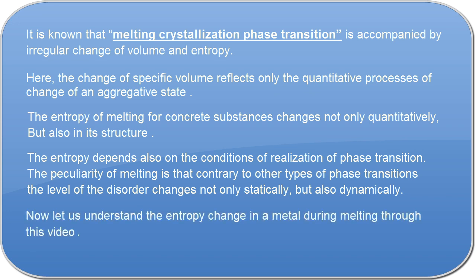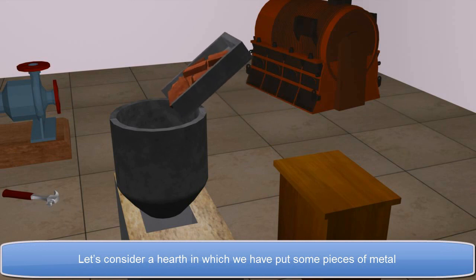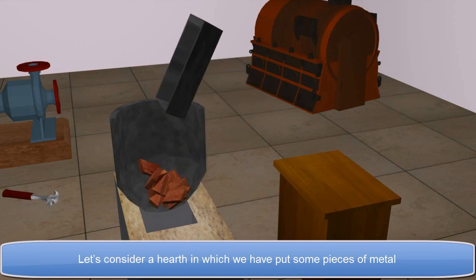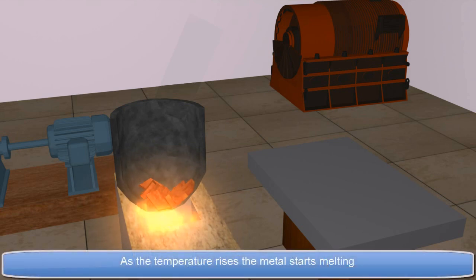Now, let us understand the entropy change in a metal during melting through this video. Let's consider a hearth in which we have put some pieces of metal. After that, we start increasing the temperature by firing under the hearth. As the temperature rises, the metal starts melting.